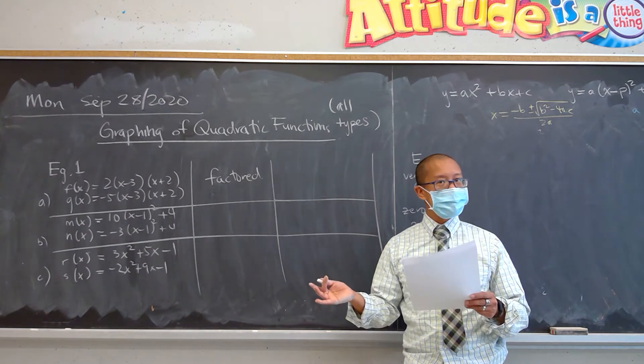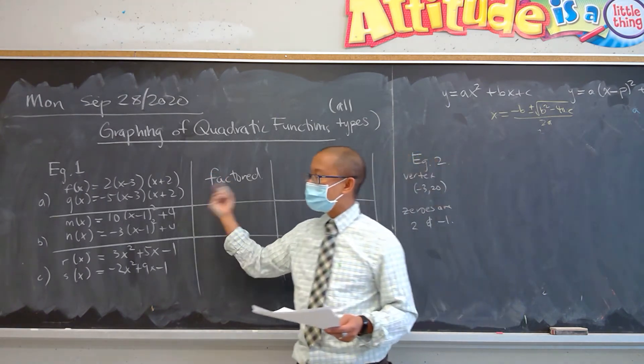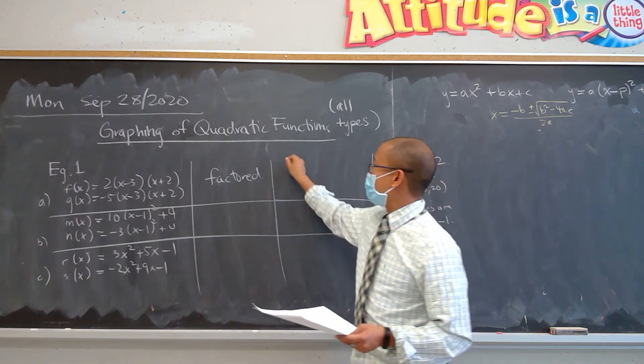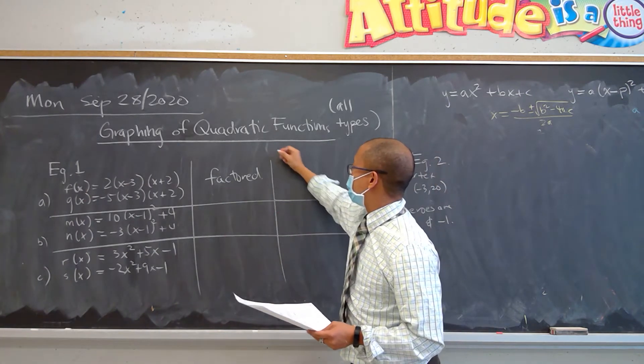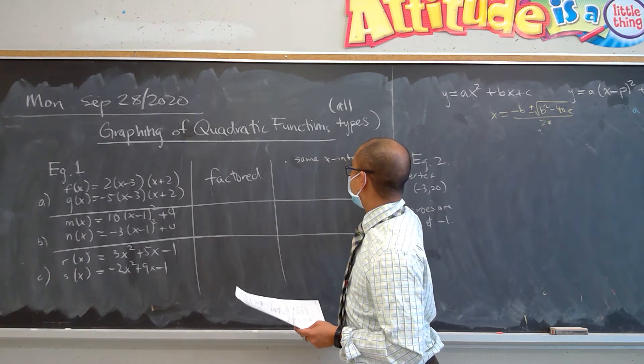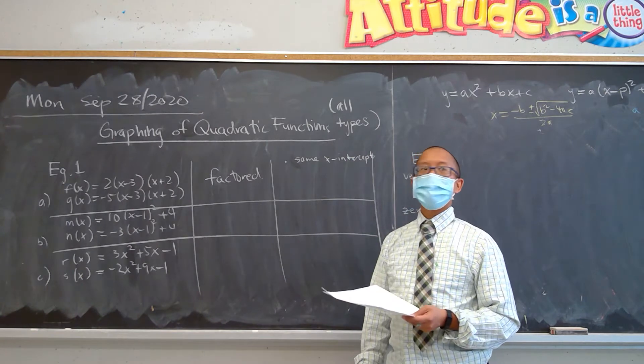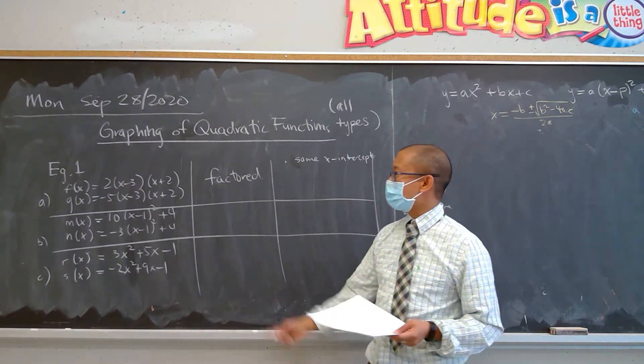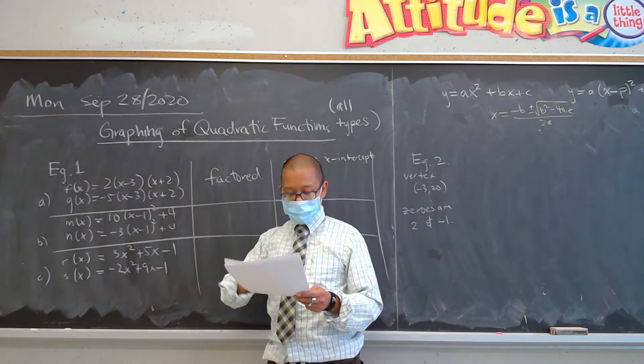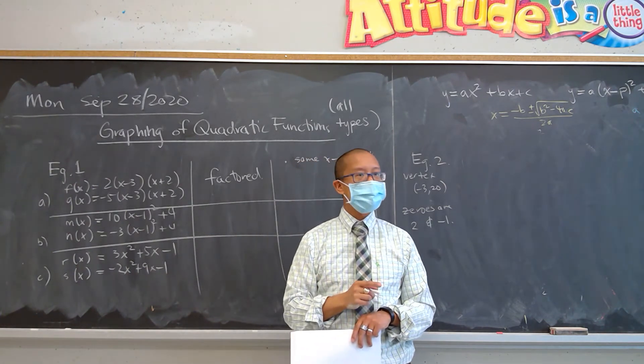That's why some of you are noticing on your test, which is actually factored form. A lot of you know this is factored form. The similarities for this example allow you to realize that they clearly have the same x-intercepts. The x-intercepts are 3 and negative 2.